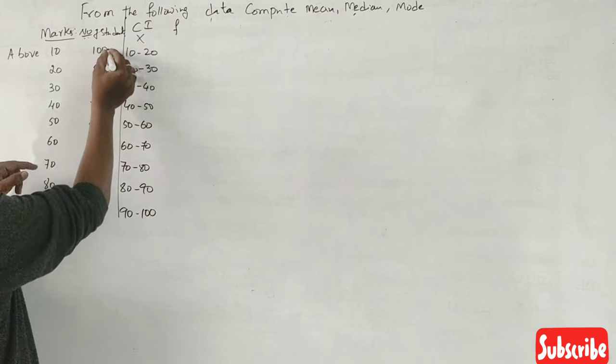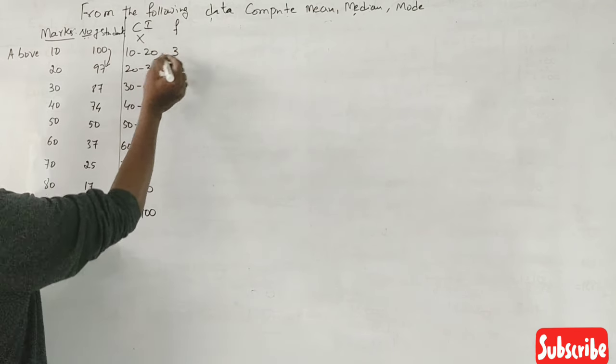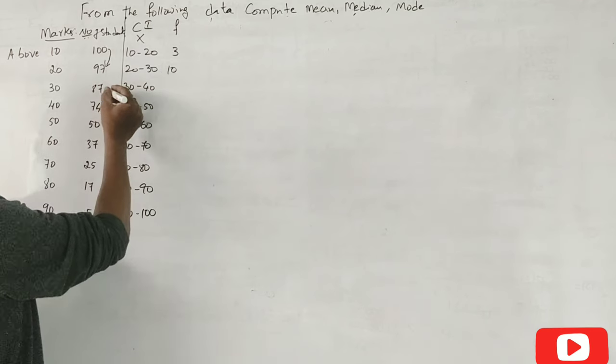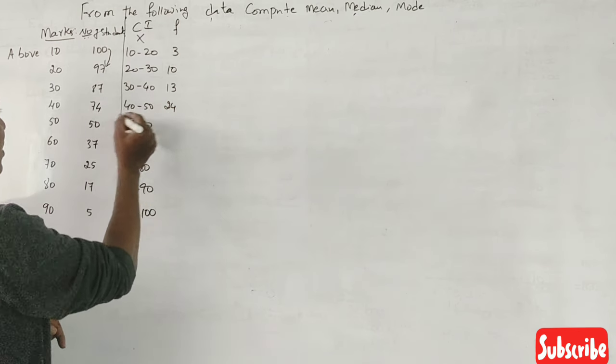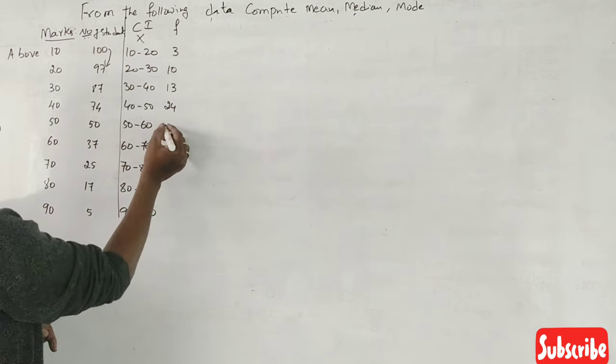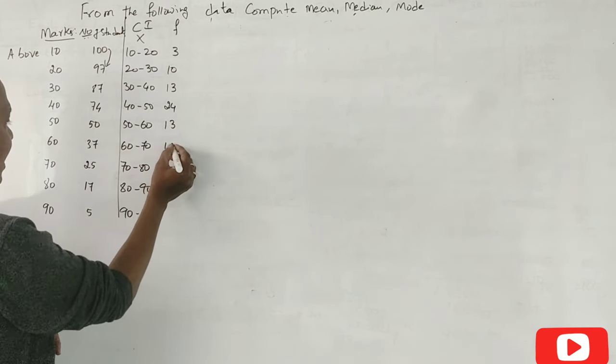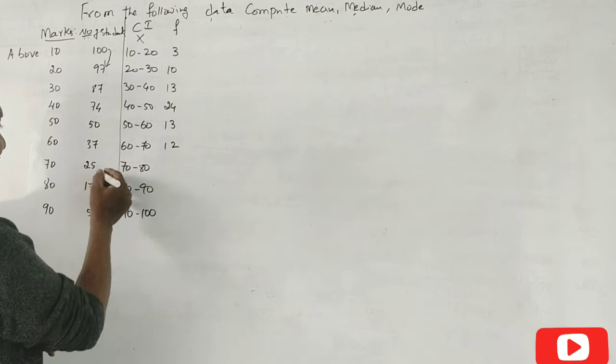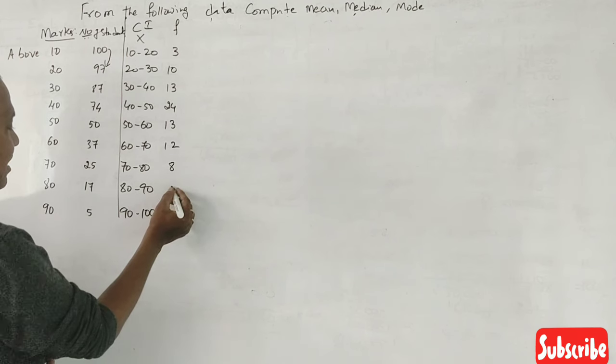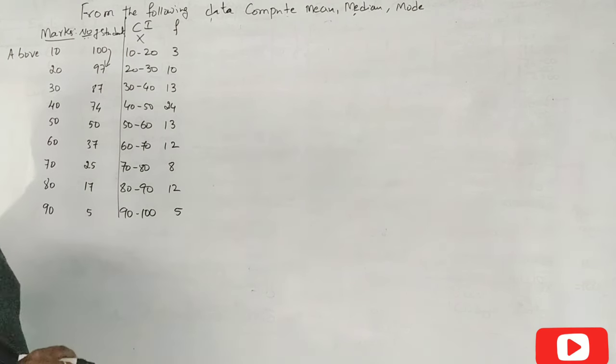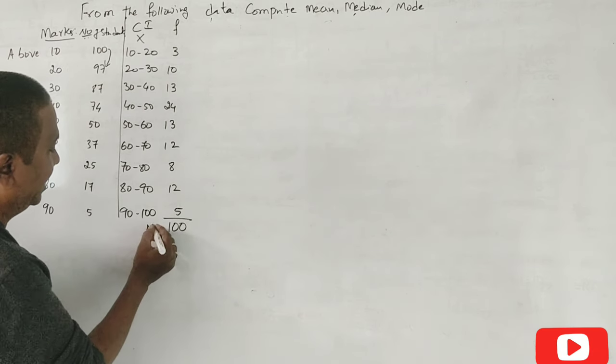Frequency. First above, it is above. Above it is mail. 100 minus 97 is 3. 97, 87 is 10. 87 minus 74 is 13. 74 minus 50 is 24. Correct? 50 minus 37 is 13. 37 minus 25 is 12. 25 minus 17 is 8. 17 minus 5 is 12. This is 5. Okay. This total is 100. 100 minus 20. This is N.